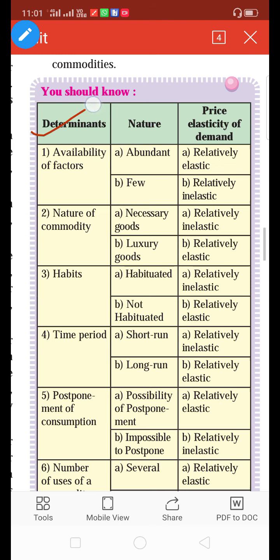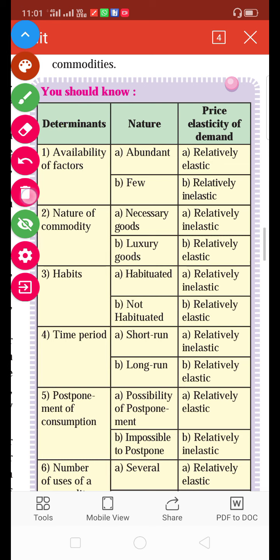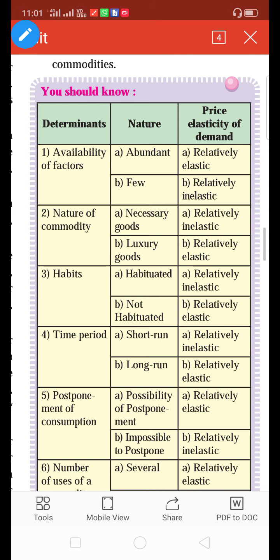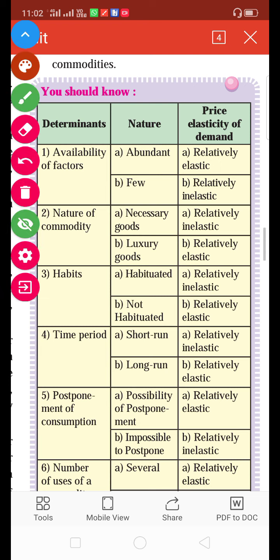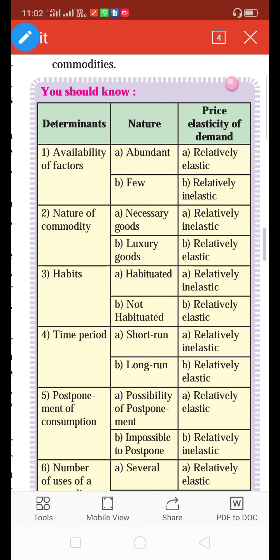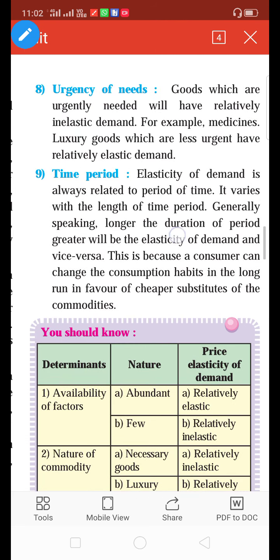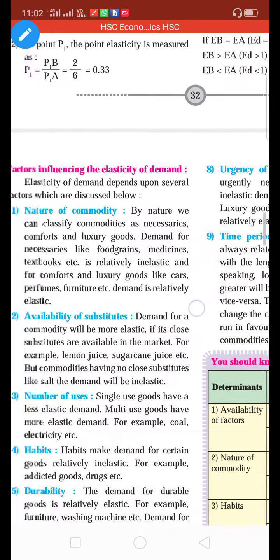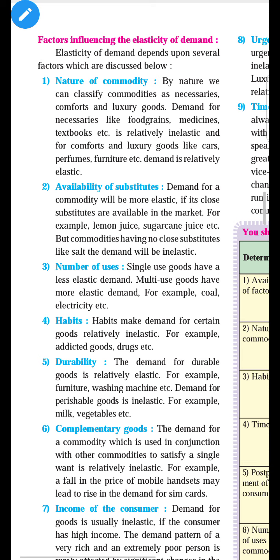In today's video, we have seen the different factors affecting elasticity of demand: nature of the commodity, availability of substitutes, number of uses, habits, durability, complementary goods, income of the consumer, urgency of needs, and time period. Keep revising all these things and note down the different types along with explanations and examples. Thank you class.